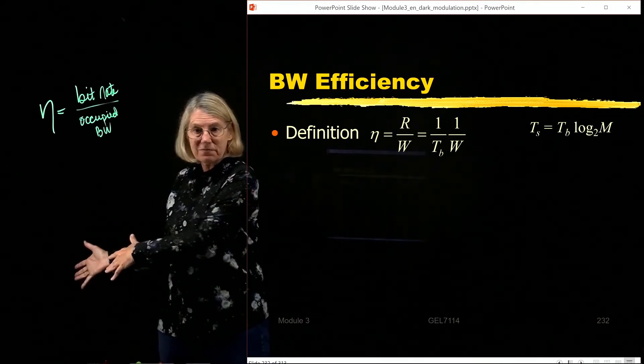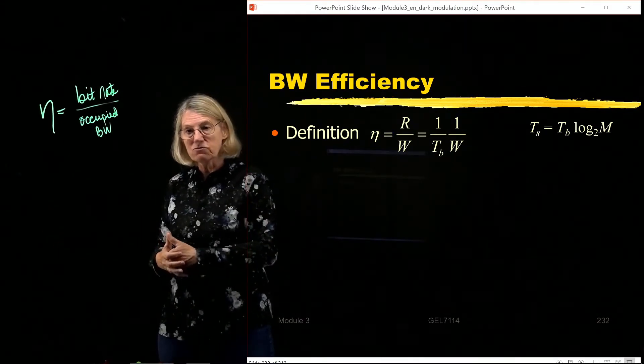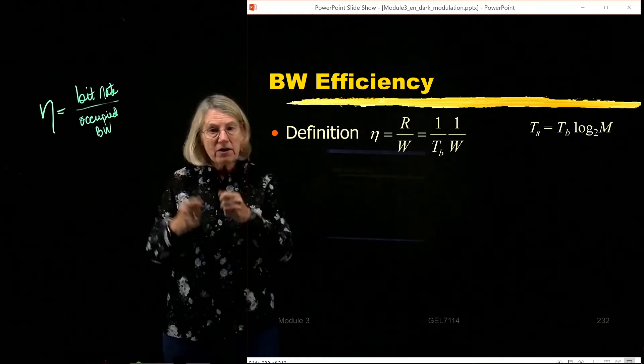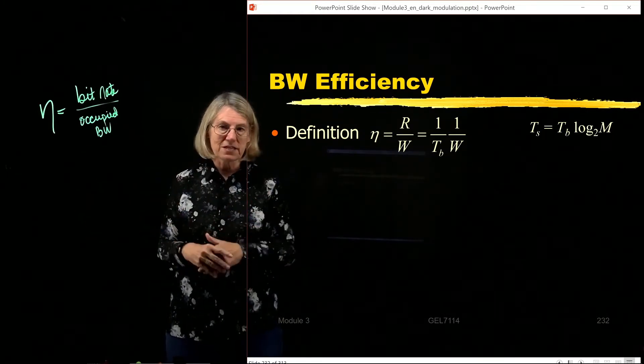Of course, when I get to a real system, I might use raised cosine, I might use some other things. The occupied bandwidth may change. But when I'm comparing them, I'm comparing them with the same assumption.